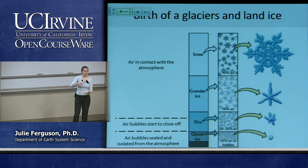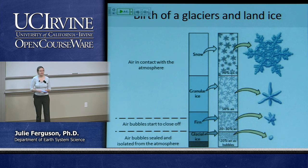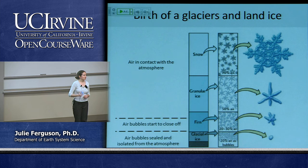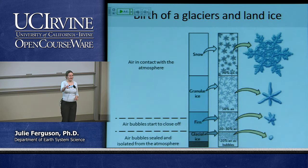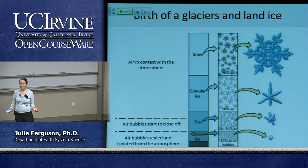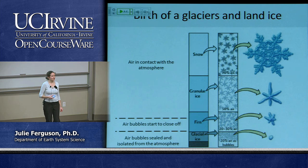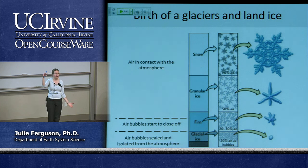For large parts of the upper section, air is still in contact with the atmosphere and can circulate through the holes. But from the firn layer downward, the air bubbles can no longer communicate with the atmosphere. This is how we separate those bubbles off — and why when we take ice cores down through great thicknesses of ice, we can get a sense of how atmospheric composition changed over time as those bubbles became sealed. That's where our CO2 records come from.